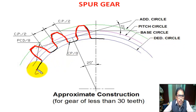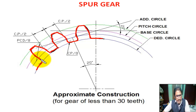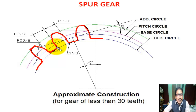We join this portion with the dedendum circle radius. Now we fillet this portion — fillet means arc — we draw an arc at this portion, arc this portion, arc this portion. The fillet measurement is CP / 8 (circular pitch divided by 8).